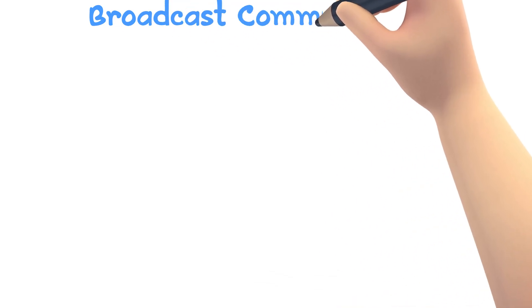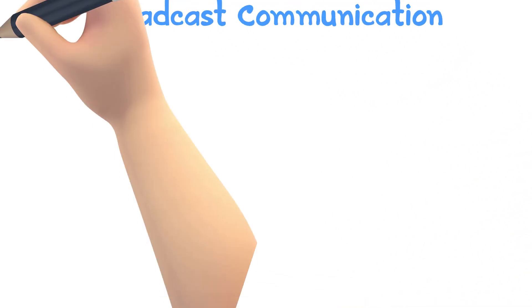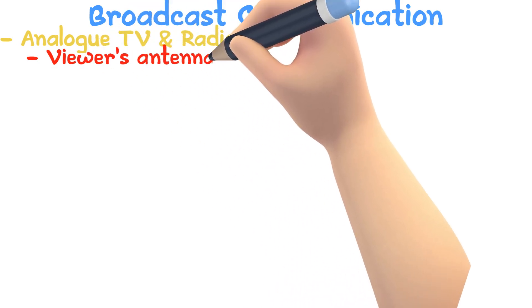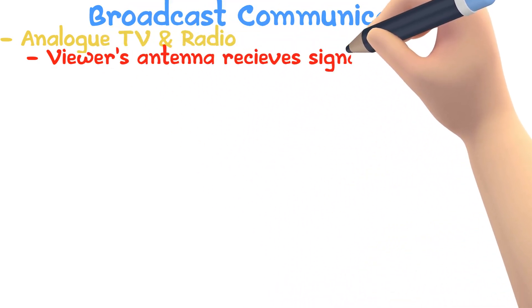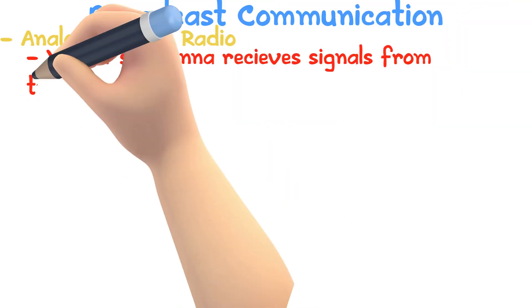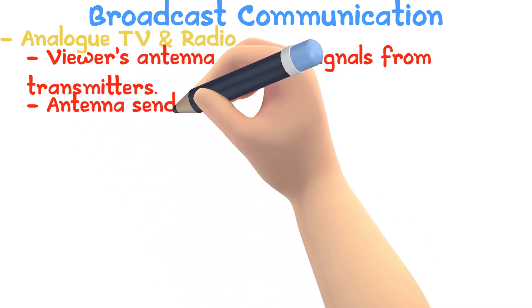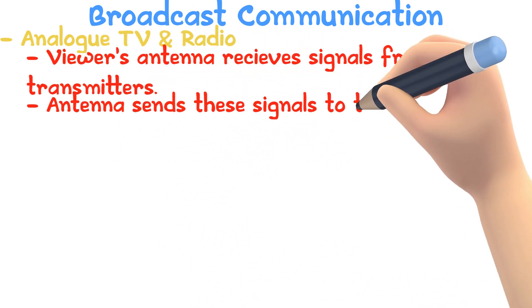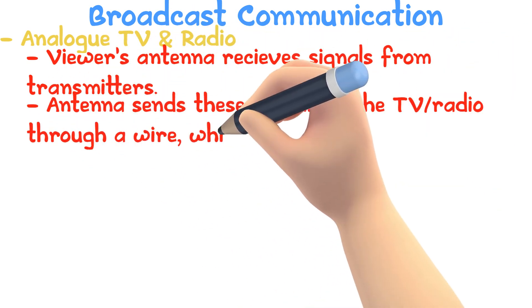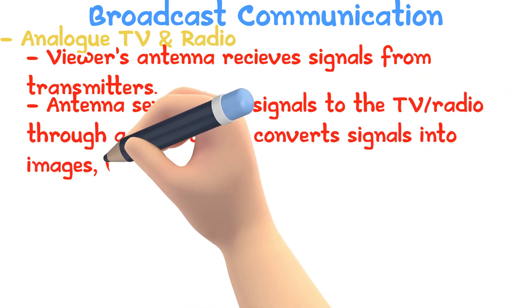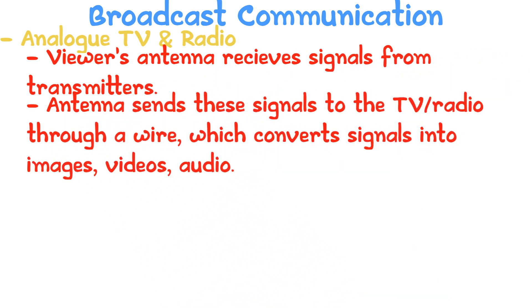Broadcast Communication — Analog TV and Radio: a viewer's antenna receives signals broadcasted by transmitters. The antenna then sends these analog signals through a wire, where the TV or radio converts them into images, video, or audio.